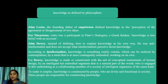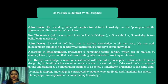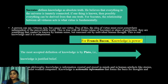For Dewey, knowledge is made and constructed with the aid of conceptual instruments of human design by an intelligent but embodied organism that is a natural part of the world, engaged as a collaborating member of a society of intelligent organisms. To make it simpler, knowledge is constructed by people who are lively and functional in society. Socrates defines knowledge as absolute truth. He believes that everything in the universe is innately connected — if one thing is known, then possibly everything can be derived from that one truth. The person can see virtuous acts but cannot see virtue itself, so the idea of virtue must exist somewhere independent of the perceivable world. This is true with all the forms or ideas of Socrates — things that cannot be known by human sense but are reasoned out by individual human thought. This is the real knowledge, and it is independent. For Francis Bacon, knowledge is power.